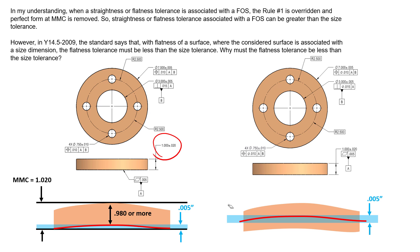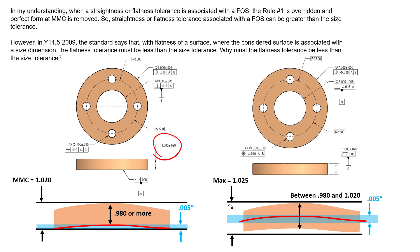We're controlling the derived median plane flatness to a much tighter value than what would be allowed if we just relied on Rule #1. The local measurements still have to be between 0.980 and 1.020, but we can have all sorts of flatness up to five thousandths according to derived median plane flatness. With this setup, every local size measurement could measure at 1.020 and still have a bow of five thousandths down the middle, resulting in a max envelope of 1.025, thus negating the effects of Rule #1.